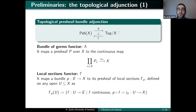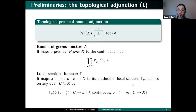The right adjoint gamma is the local sections functor. It takes a bundle, i.e., a continuous map from some E to X, and constructs its pre-sheaf of local sections: for every open U in X, gamma(E)(U) is the collection of continuous maps from U to E that compose with the bundle map to give the inclusion of U into X. This is essentially a contravariant hom-functor.